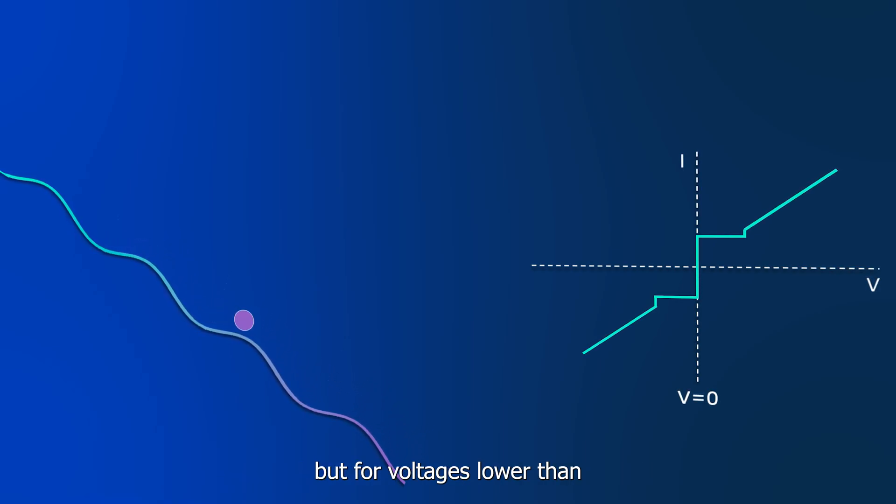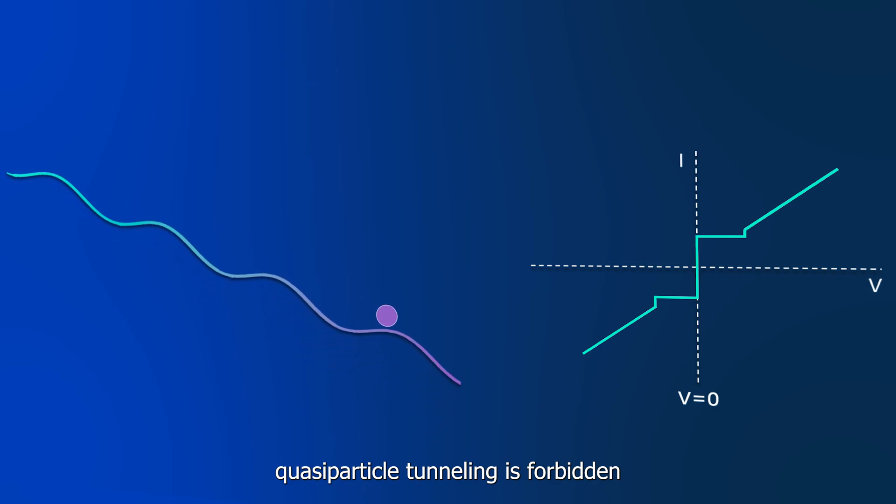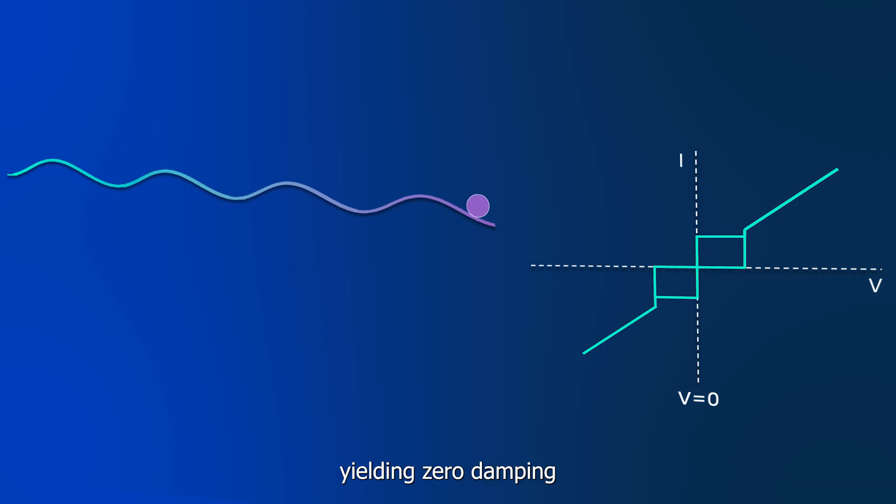But for voltages lower than two times the energy gap, quasiparticle tunneling is forbidden, and the resistance of the junction approaches infinity, yielding zero damping.